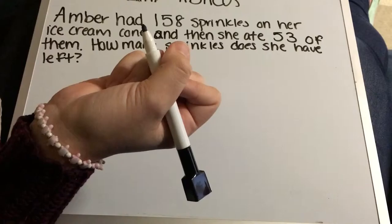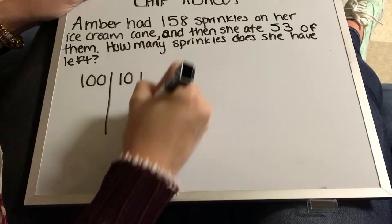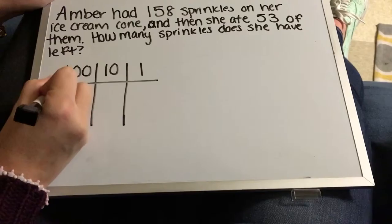The question reads: Amber had 158 sprinkles on her ice cream cone, and then she ate 53 of them. How many sprinkles does she have left? So we're going to do the chip abacus chart again: hundreds column, tens, and ones.